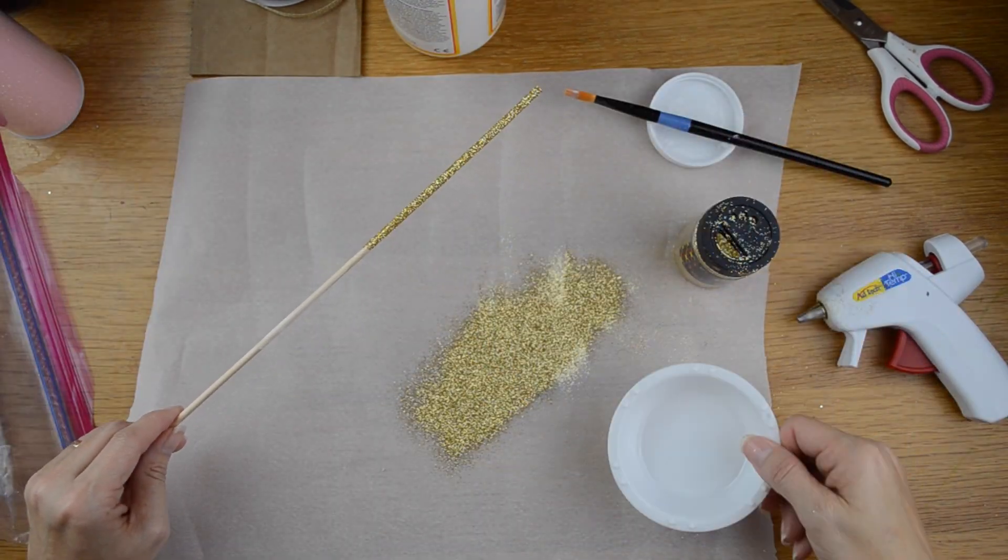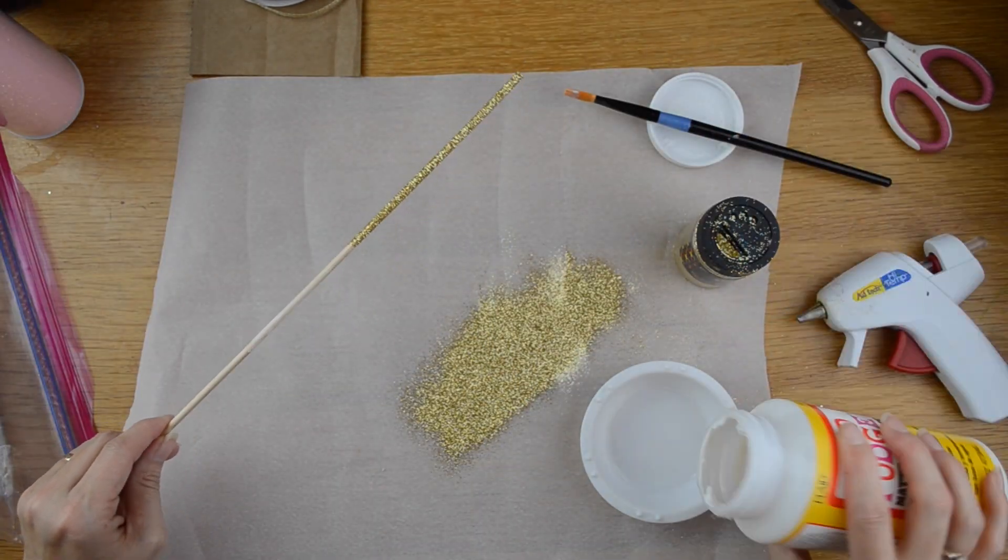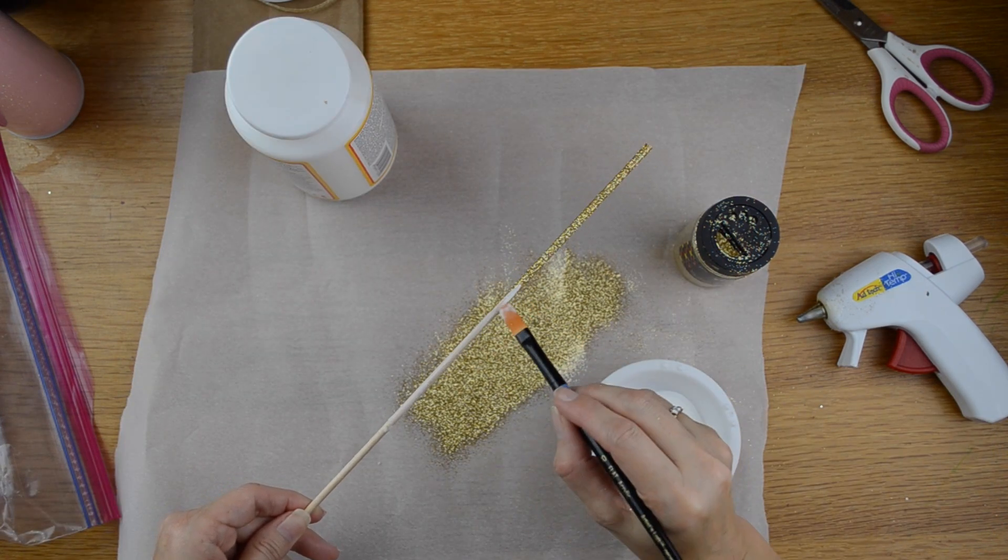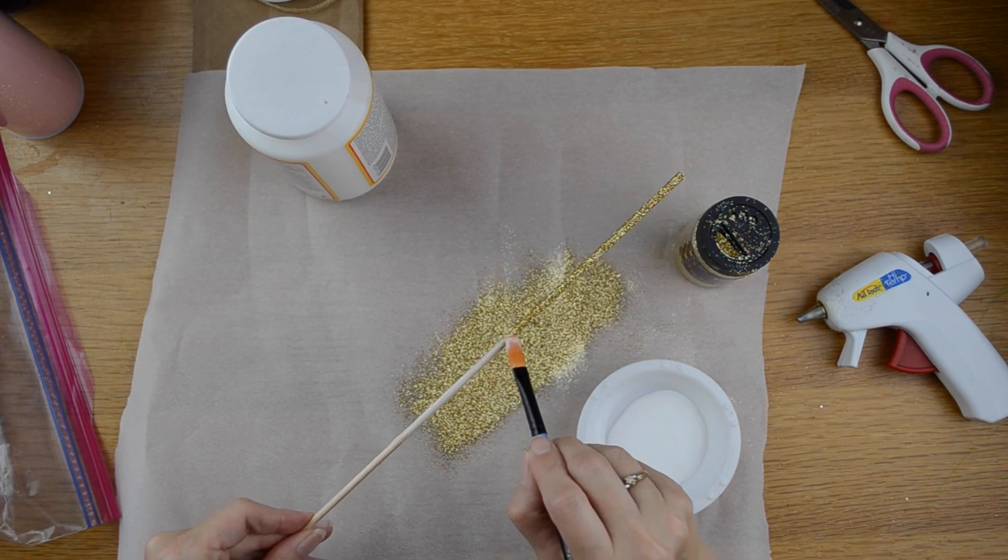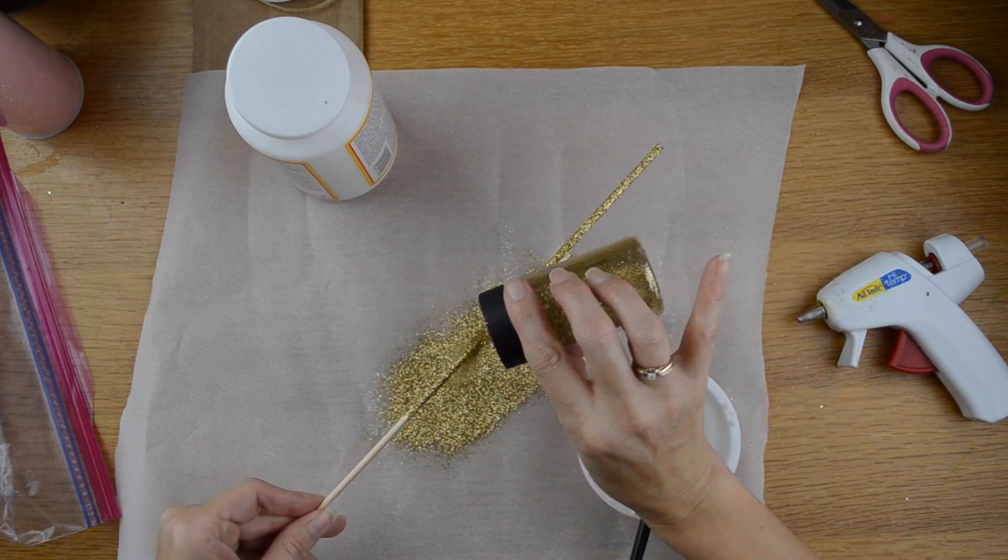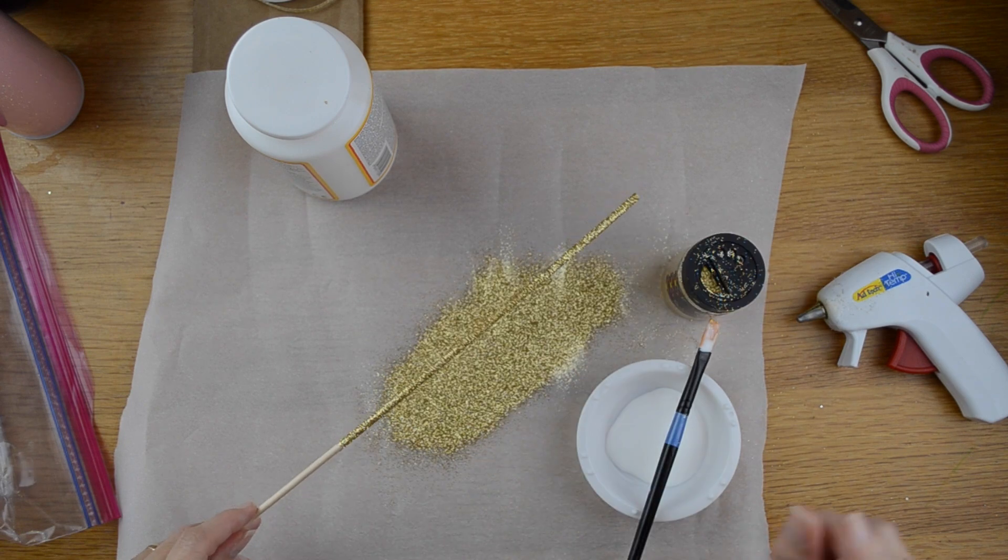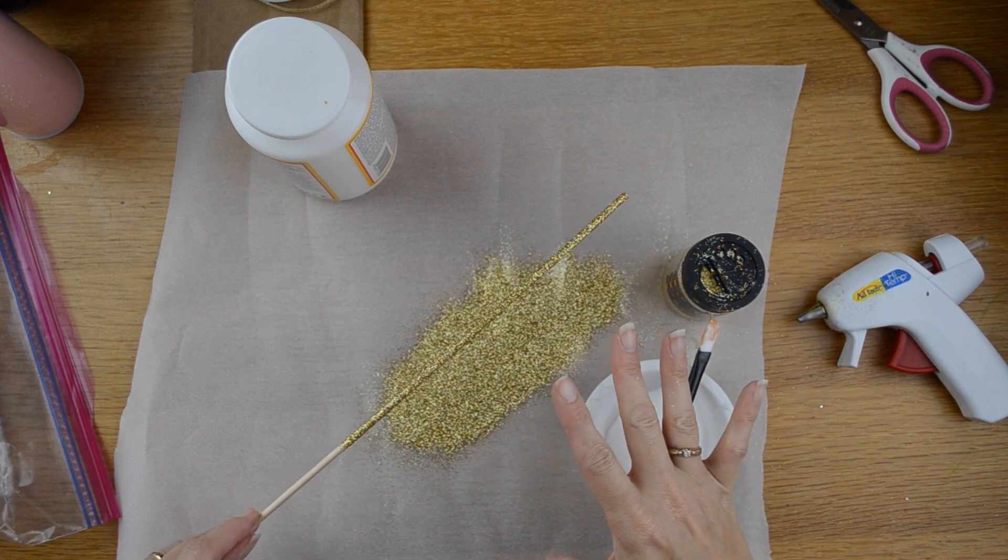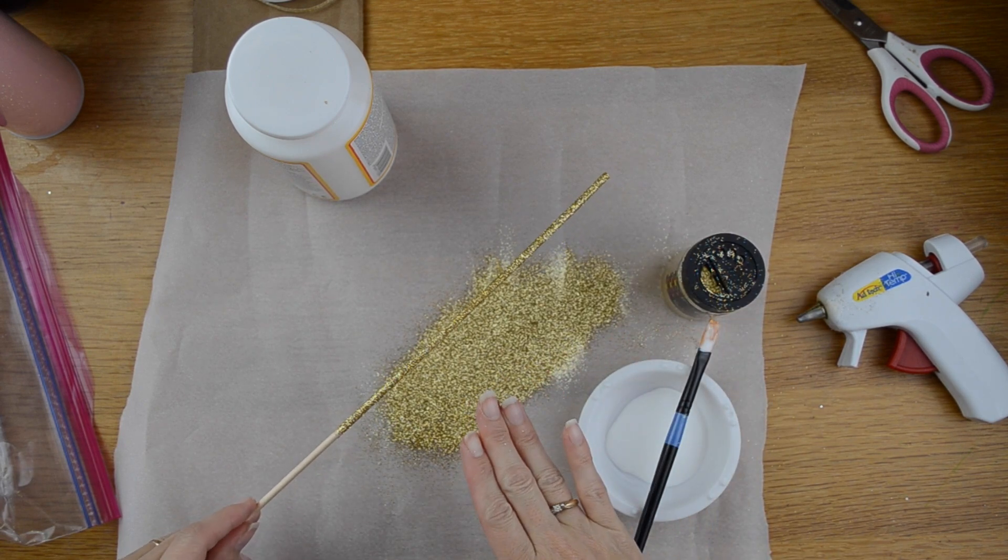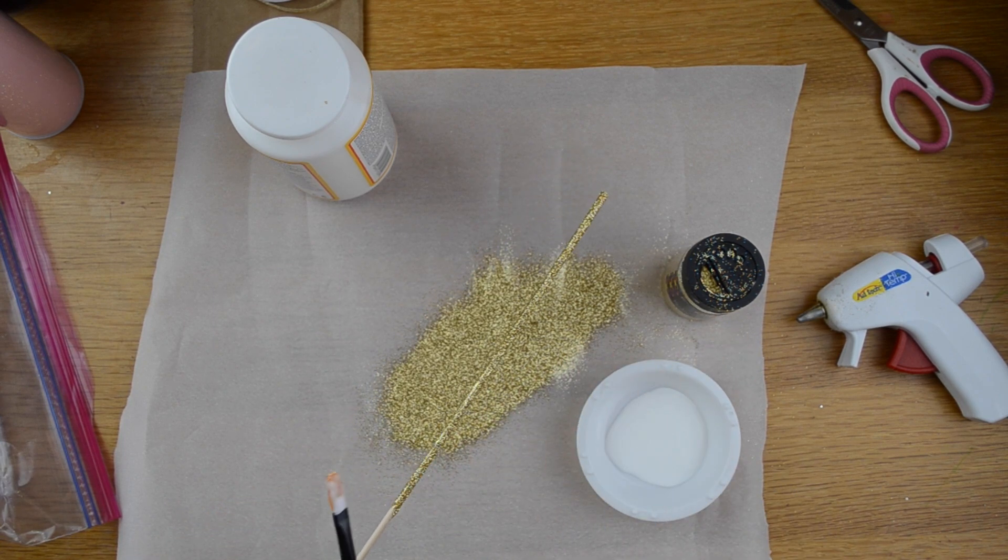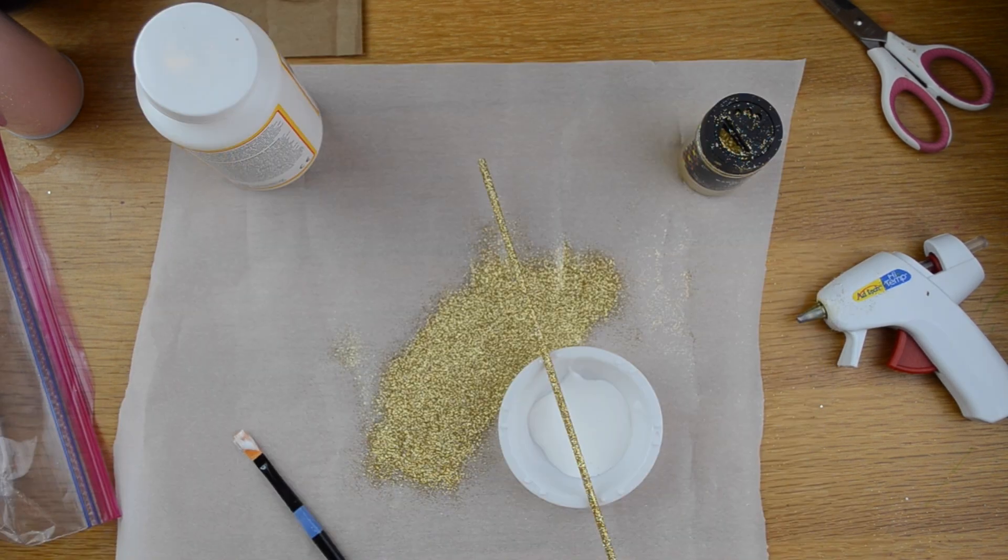I do recommend having a little bowl to put your glue in that way you don't contaminate your other glue with glitter. Also, you don't actually have to use the glitter. You can use ribbon or you can paint your dowel rod any color that you want. I just really like the glitter because I like glitter.